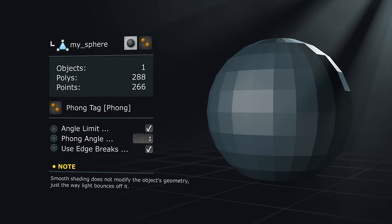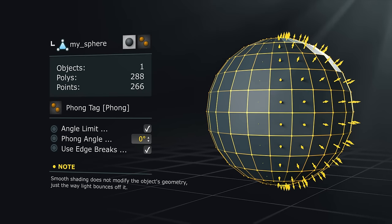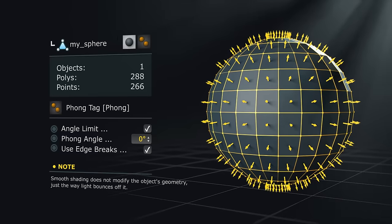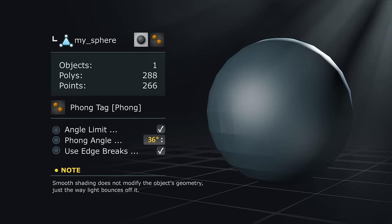This sphere is flat shaded and is made up of 288 polygons. By using the normal information, the computer can interpolate the shading around the edges and turn this sharp disco ball into a smooth looking sphere.